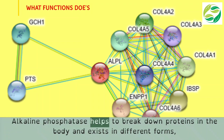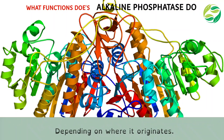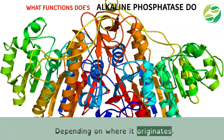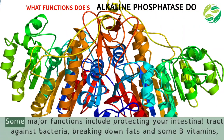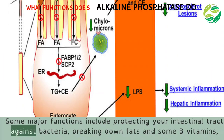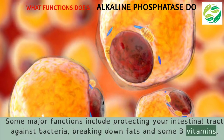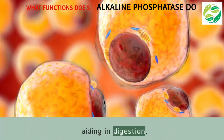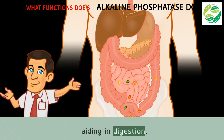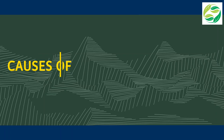What functions does alkaline phosphatase perform? Alkaline phosphatase helps to break down proteins in the body and exists in different forms depending on where it originates. Some major functions include protecting your intestinal tract against bacteria, breaking down fats and some B vitamins, aiding in digestion, and promoting bone formation.